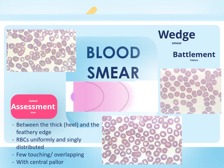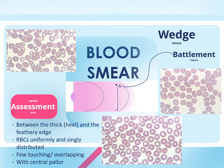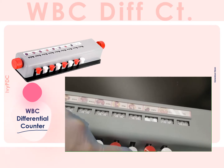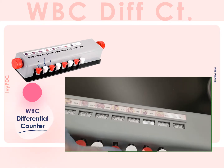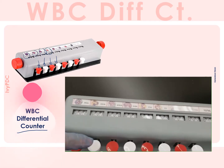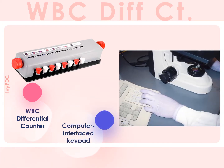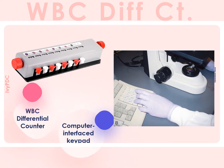After locating the area for assessment, we employ the battlement or serpentine pattern for counting white blood cells, moving field by field in a systematic zigzag path. White blood cells are counted and classified using a WBC differential counter, which has push-down buttons representing the different types of white blood cells, enabling laboratory scientists to count and differentiate them quickly. Nowadays, another method uses a computer-interfaced keypad that directly records the count to a computer.